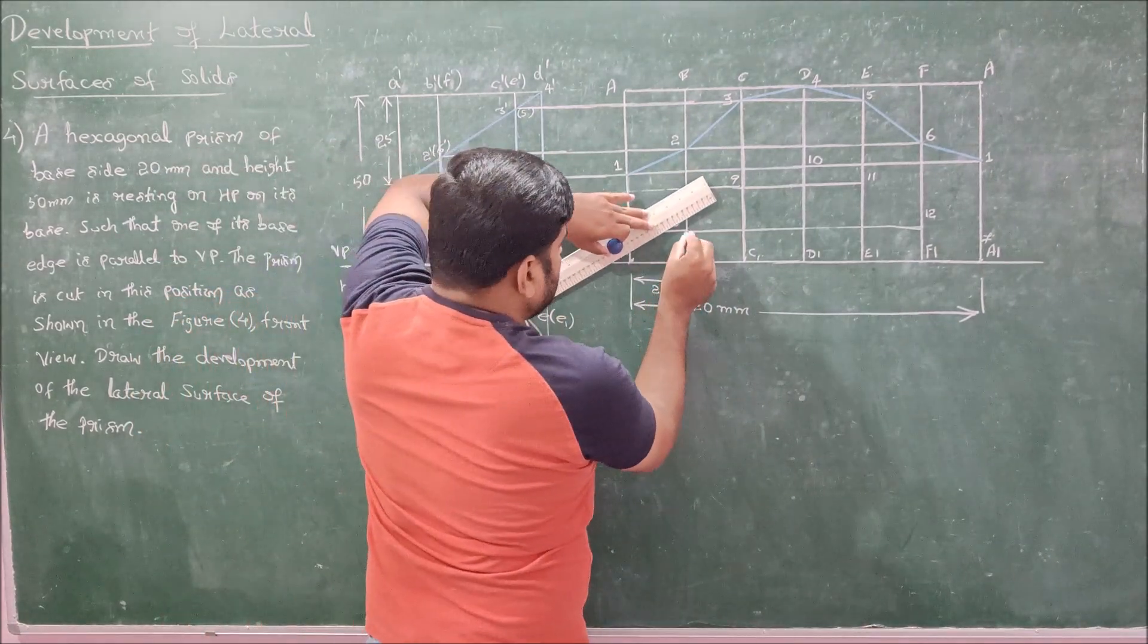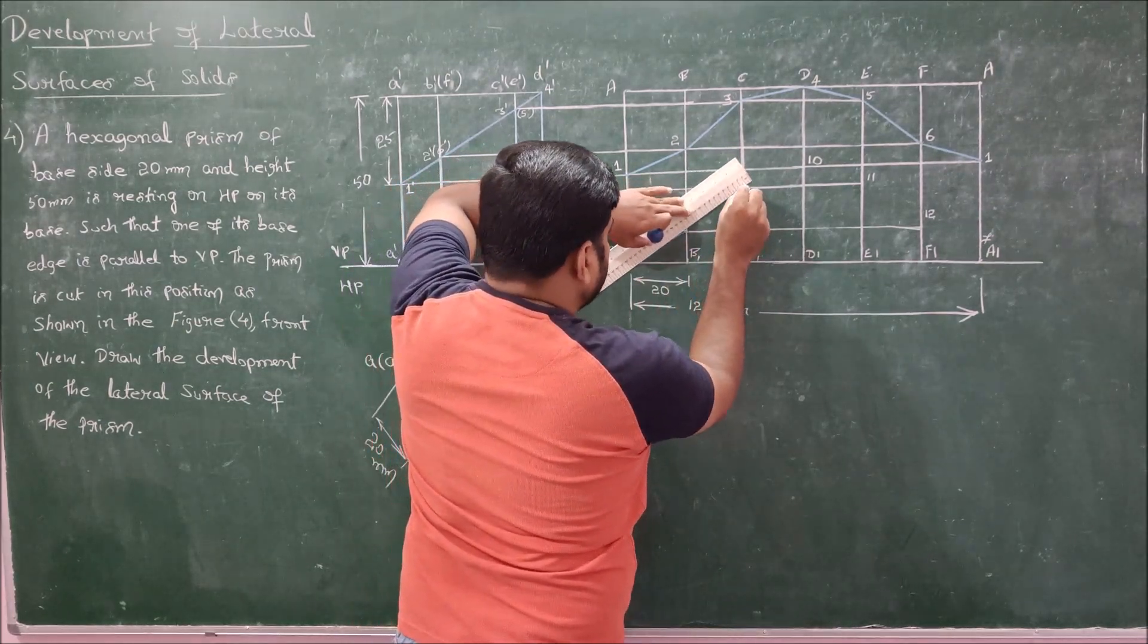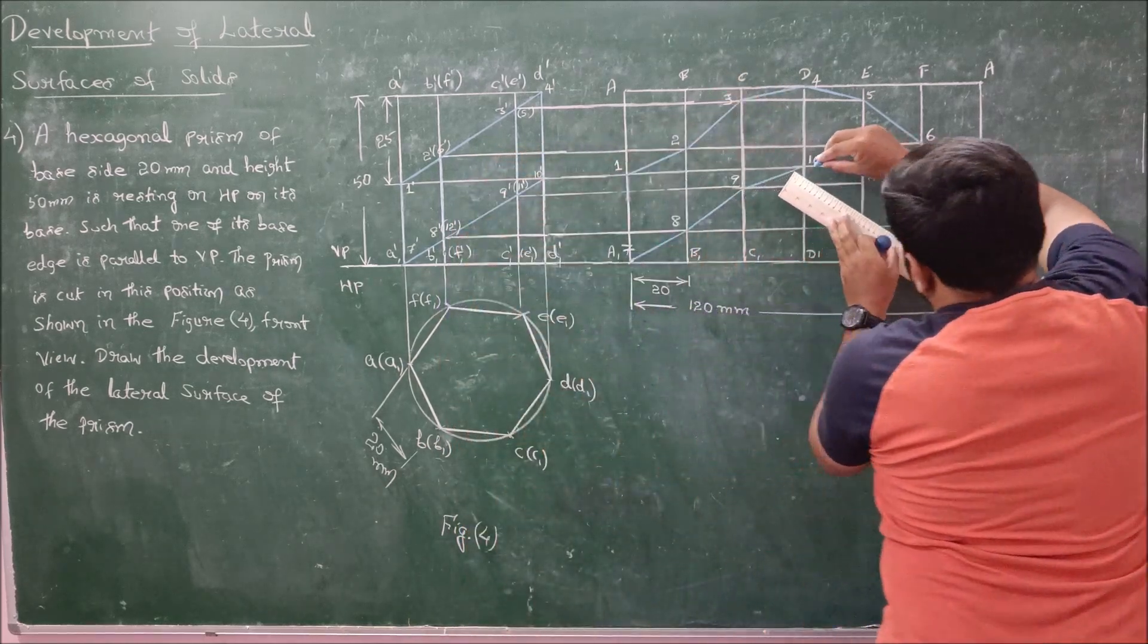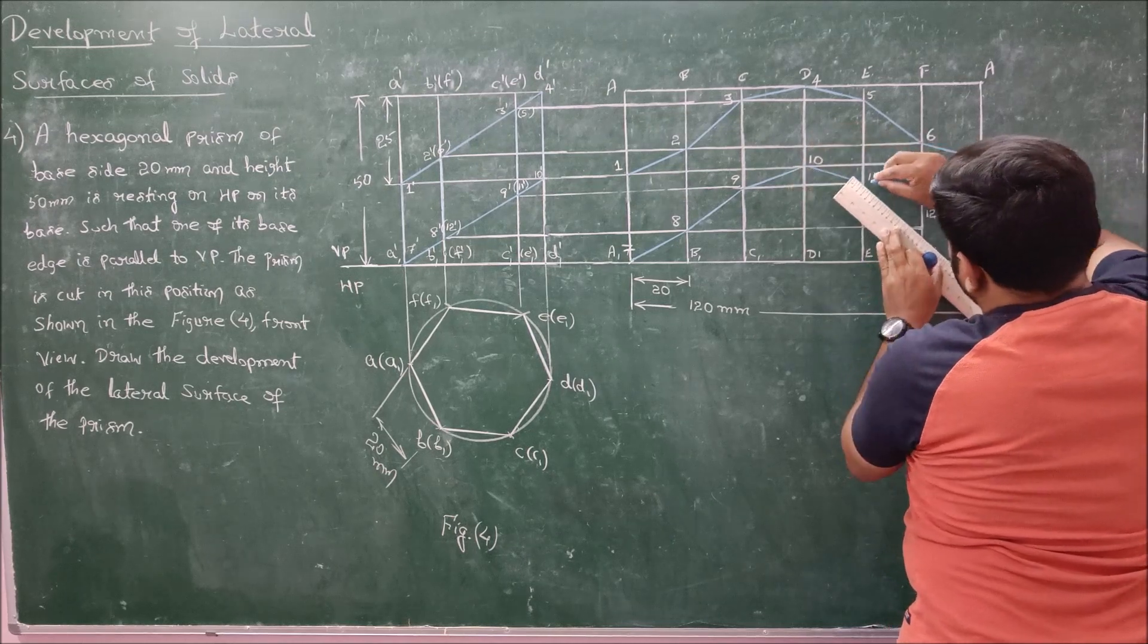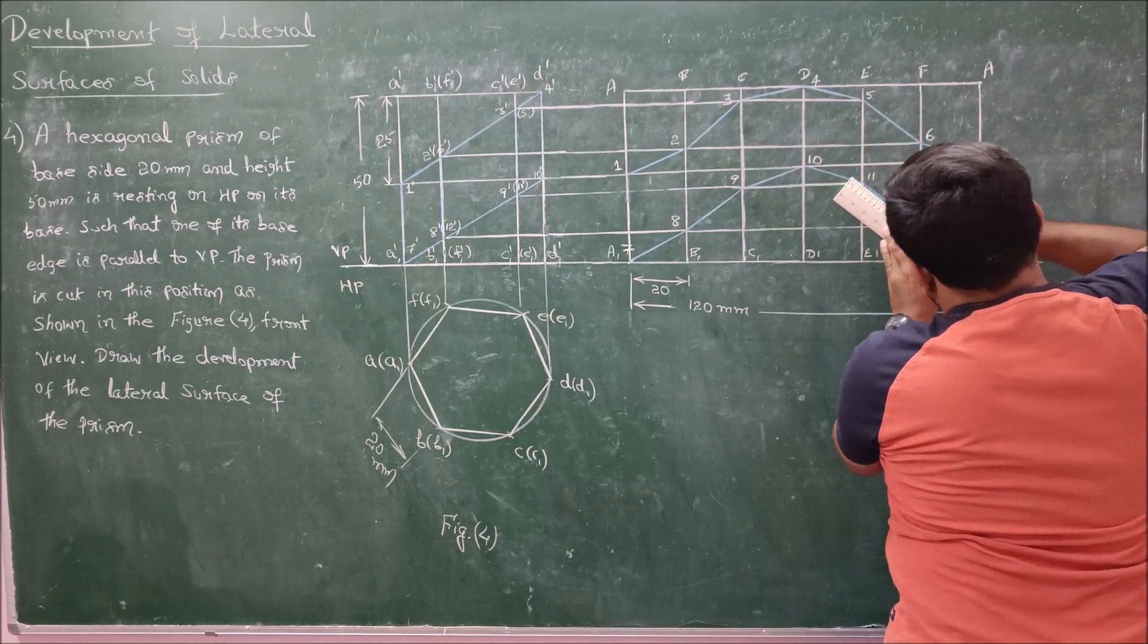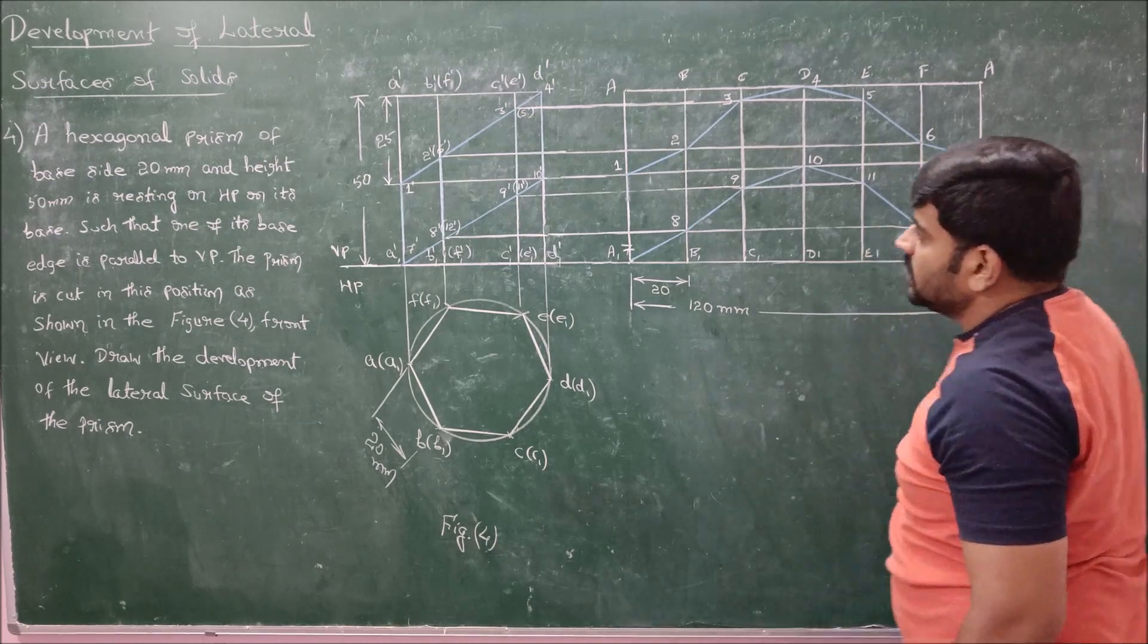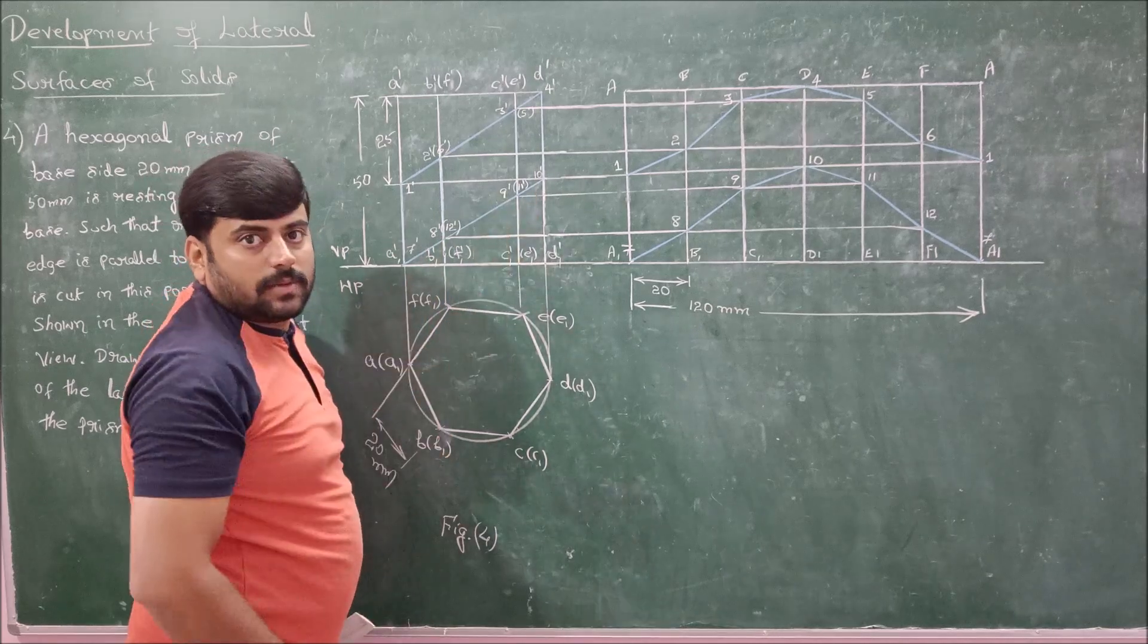Now going for second cutting plane, we have 7 to 7. That is connect 7 to 8, 8 to 9, 9 to 10, 10 to 11, 11 to 12, and then from 12 to 7. So this completes the projection of second cutting plane.